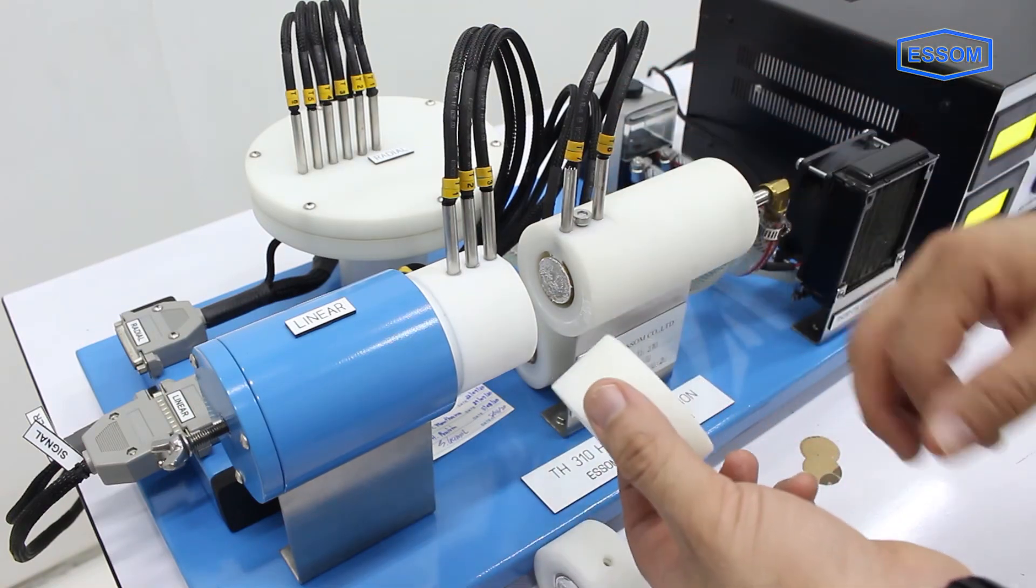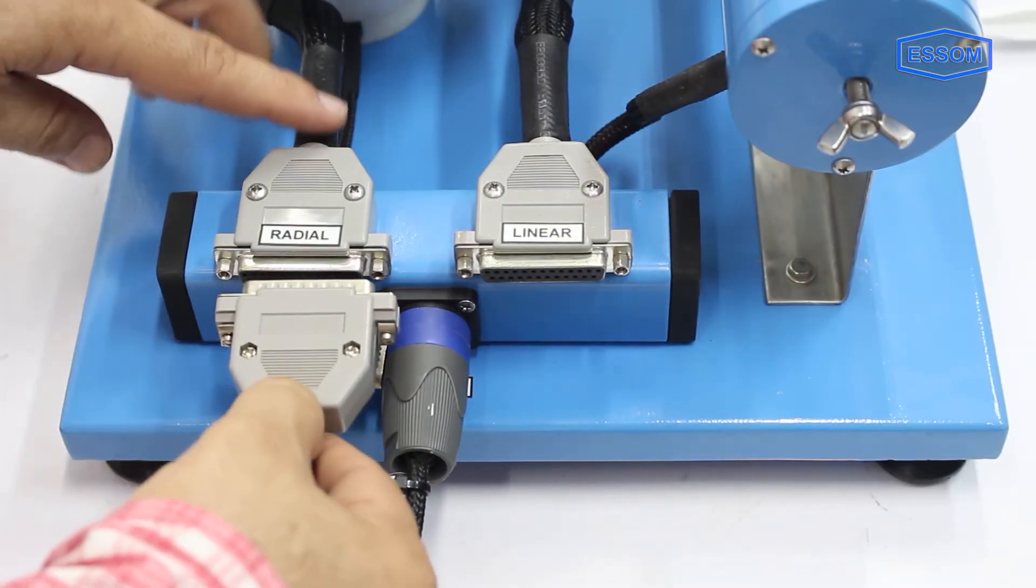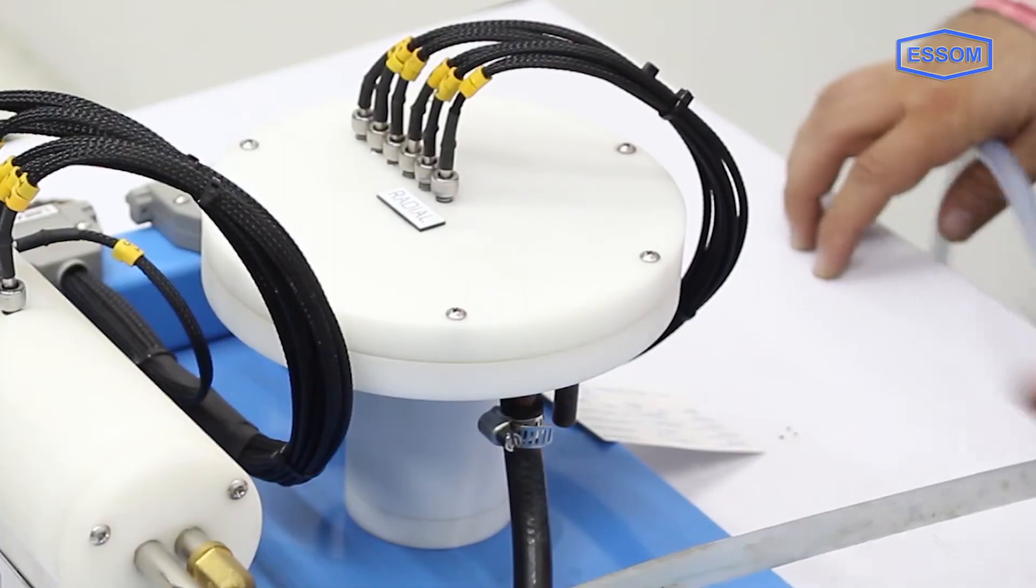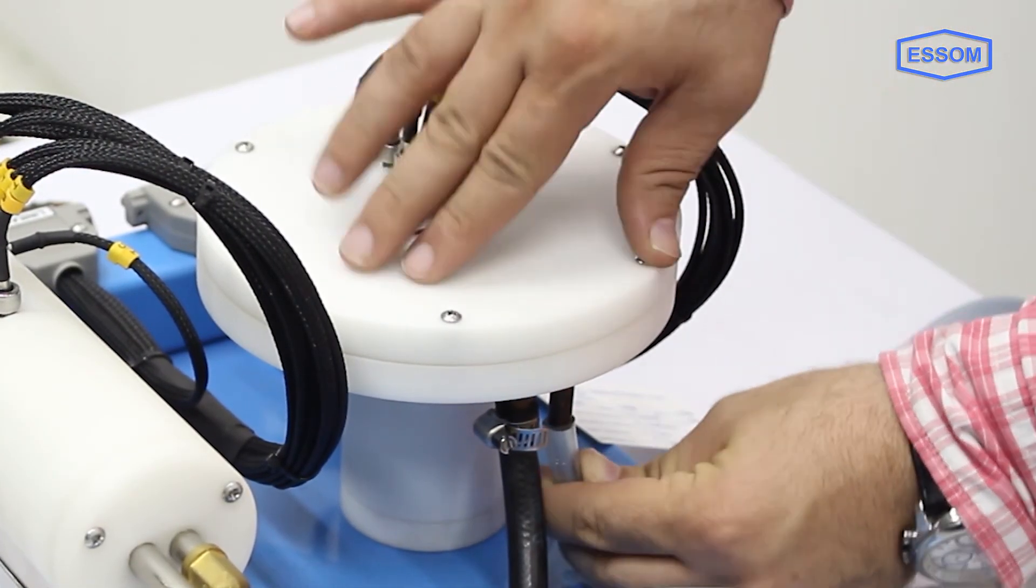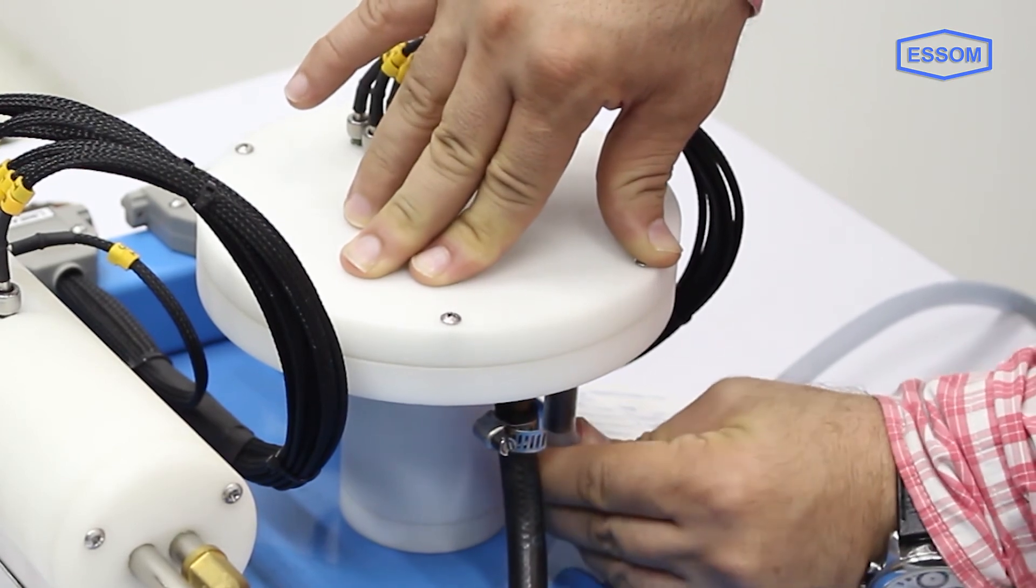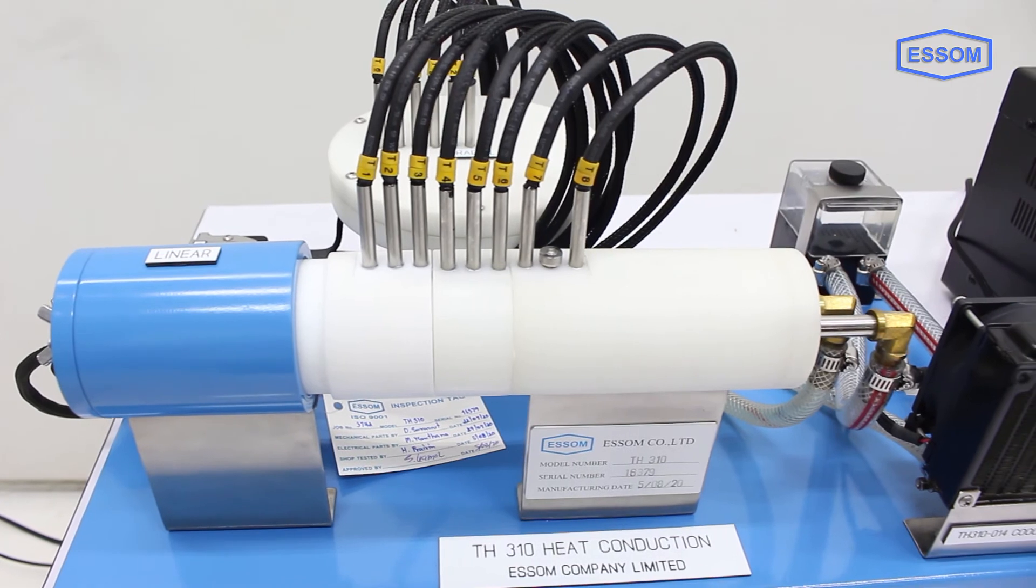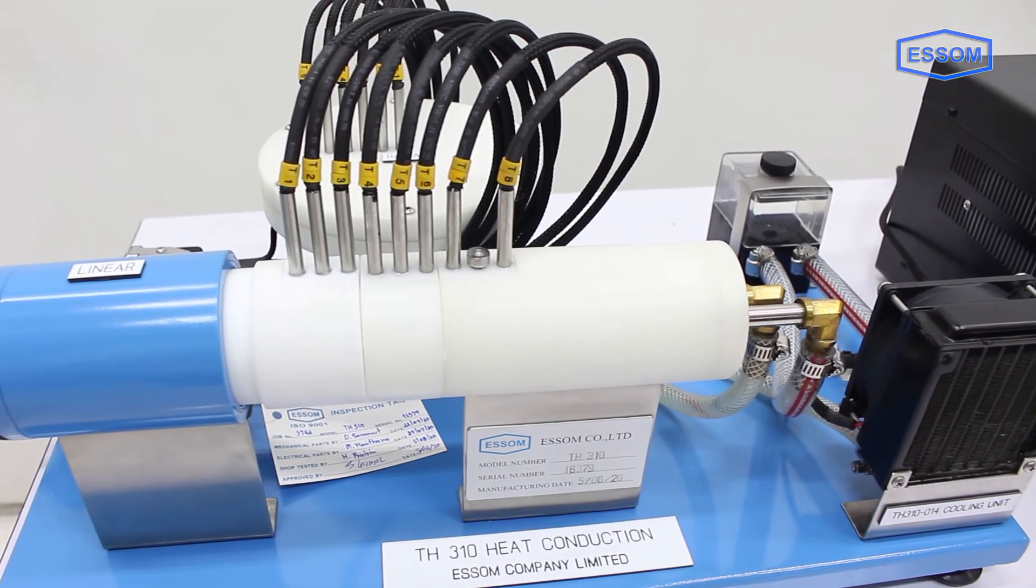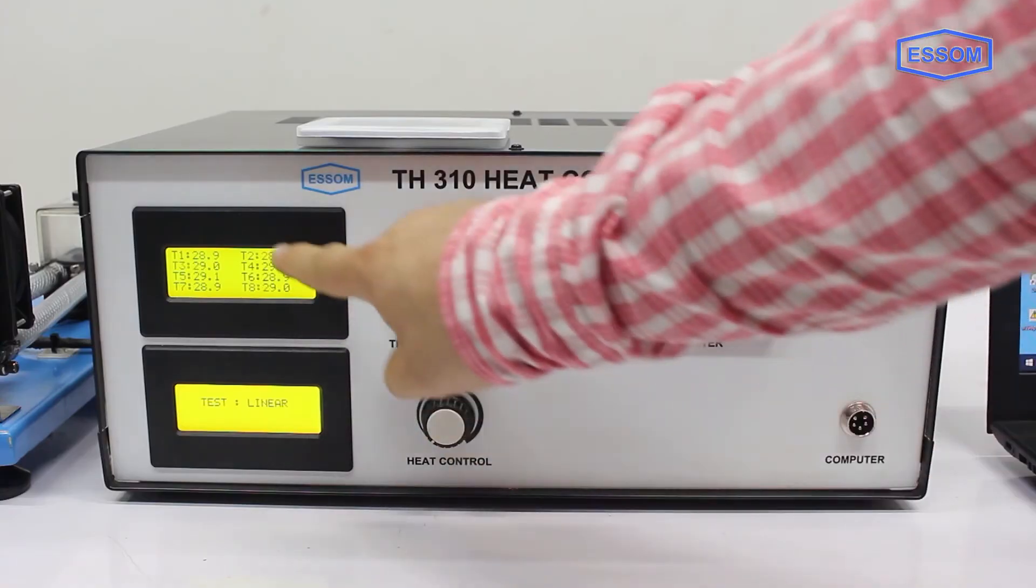Radial heat conduction unit. The unit consists of a brass disc heated at the center by a heater with cooling water circulating around the periphery. Six temperature sensors are placed along a radius. The metallic parts of both linear and radial heat conduction units are effectively insulated inside plastic casings.